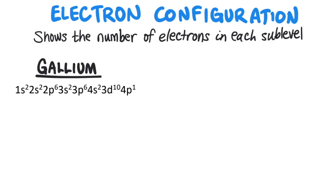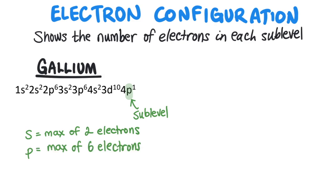An electron configuration shows the number of electrons in each sublevel. The sublevels are represented by a letter. There's the S sublevel that can hold a maximum of 2 electrons, the P sublevel that can hold a maximum of 6 electrons, the D sublevel that can hold a maximum of 10 electrons, and the F sublevel that can hold a maximum of 14 electrons.